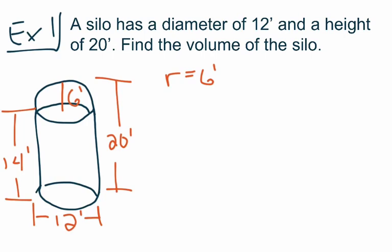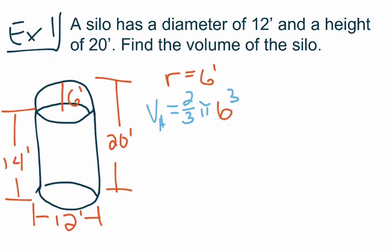We take 6 feet away from the overall height of 20 feet and we get a height for the cylinder of 14 feet. That should be all the information we need to find the volume of these two figures. Let's find the volume of the hemisphere first: V_H is equal to two-thirds times pi times 6 cubed. Our first step is to take 6 and cube it, which gives us 216. So the volume of the hemisphere is equal to two-thirds times pi times 216.